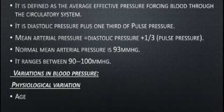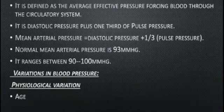The formula for mean arterial pressure is: diastolic pressure plus one third of pulse pressure. So MAP = diastolic pressure + (1/3) × pulse pressure. This is a very important formula you should know.